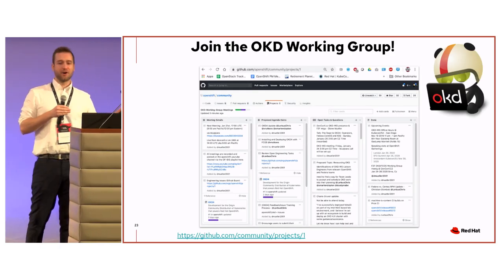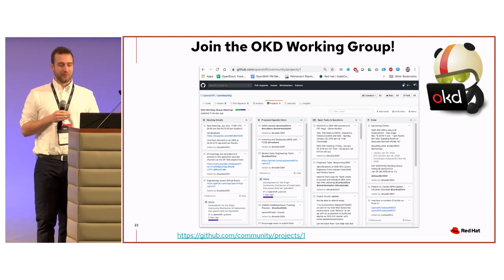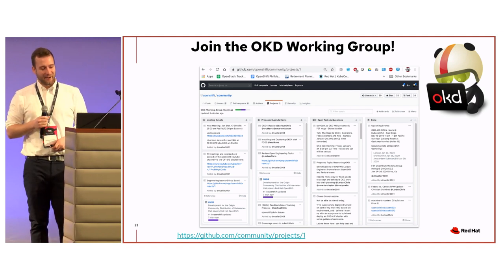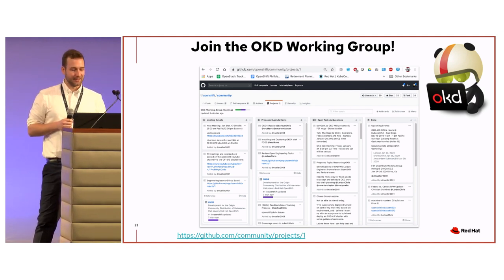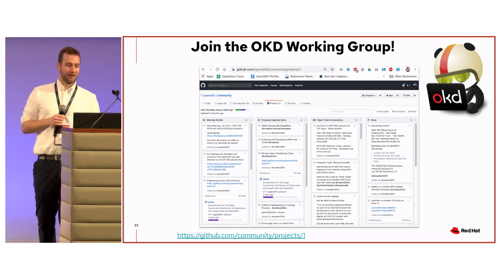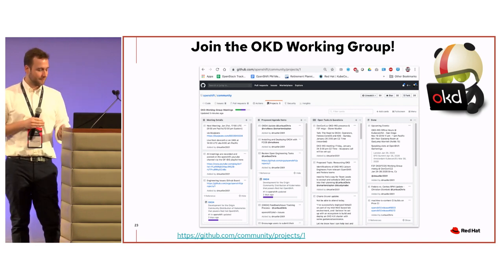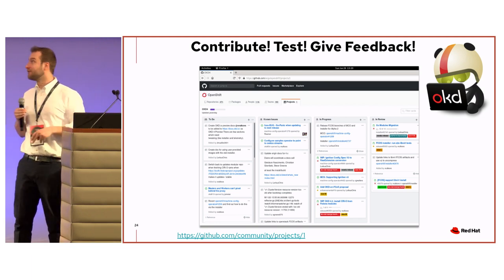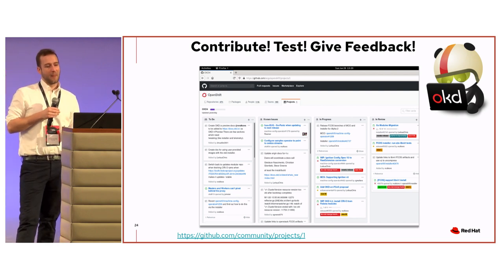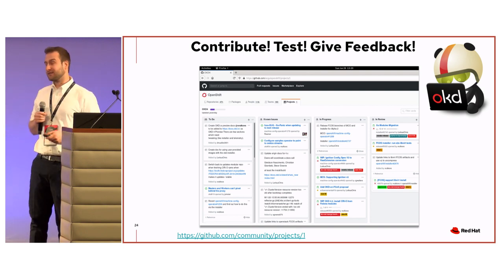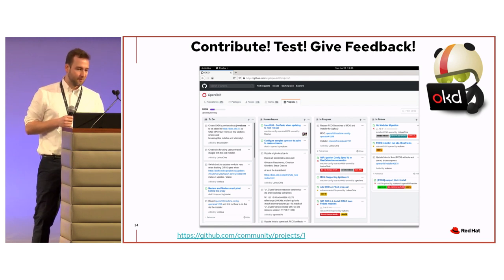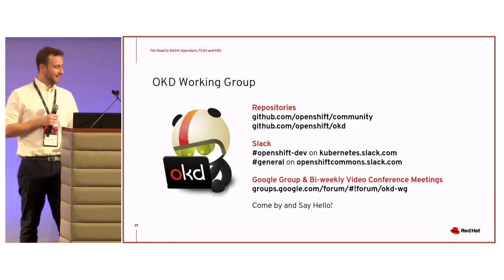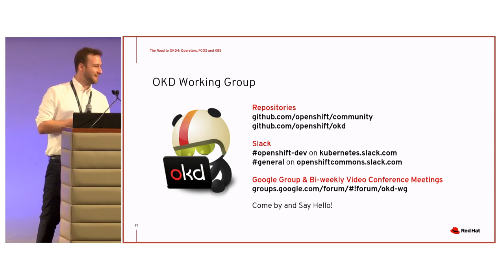We have two Kanban projects on GitHub as well. One in the community repository for planning out meetings and setting the agenda — Diane manages that usually, and you can see agendas up front and add ideas. The other is the OKD 4 project in the OpenShift organization — it's the only organization-wide project there — for following the current status of development and engineering work on OKD 4. And with that, I'm through. Thank you very much.